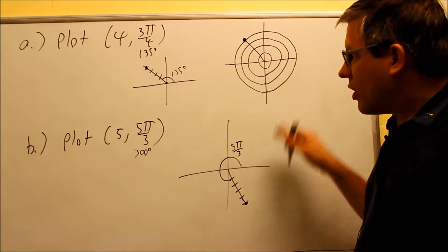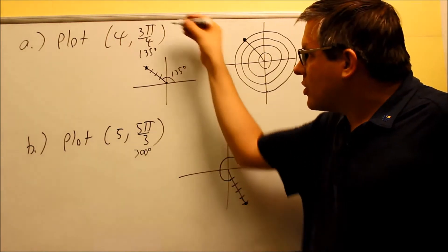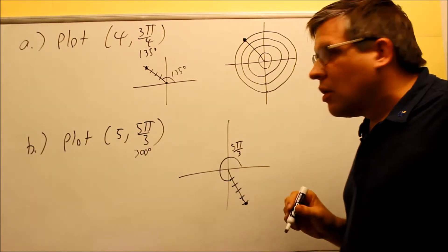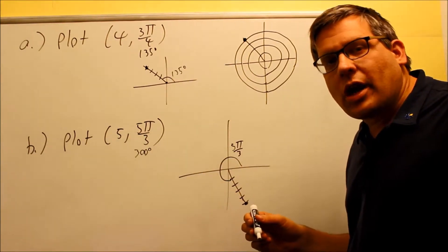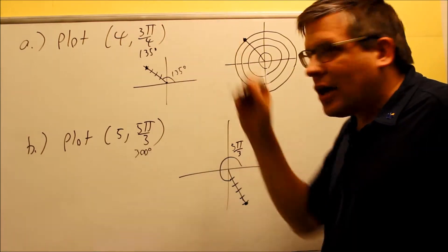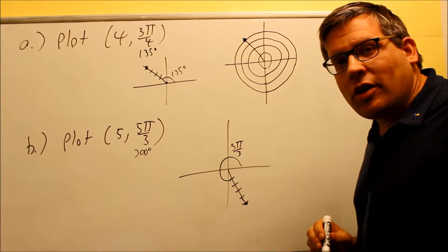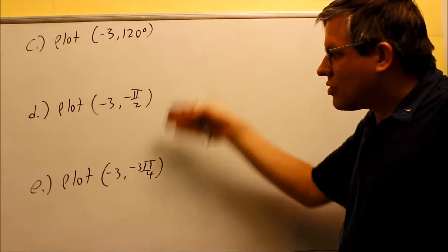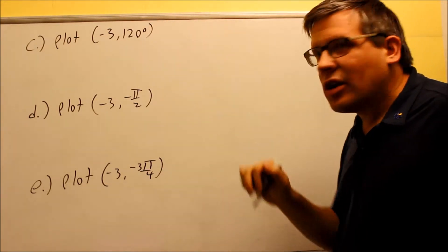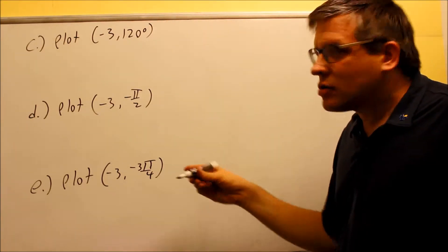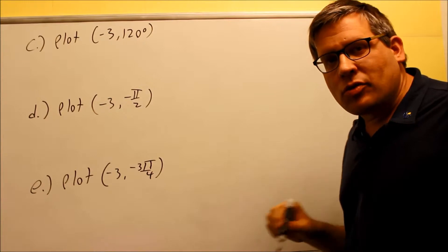The ones I've done so far have positive r's and positive thetas. The next two examples we'll take a look at involve a negative r or a negative theta. These are going to involve negative r's or negative thetas, so let's take a look at these examples.